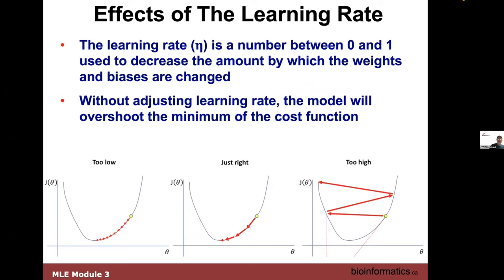The learning rate — that's eta — is typically a number between zero and one, reflecting the rate at which weights and biases are changed. You can have tiny little steps going down as part of your optimization function, giant leaps, or jumps that are first large but then progressively smaller as you get down to the minimum. This is how gradient descent finds the optimal rate.